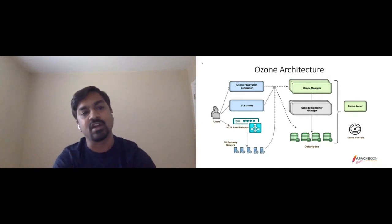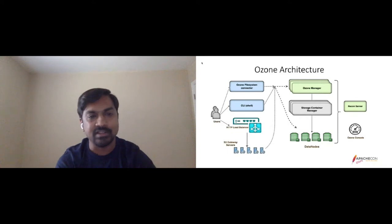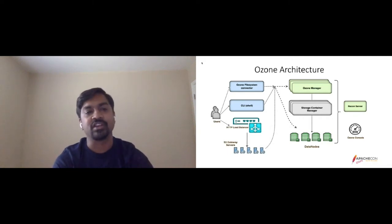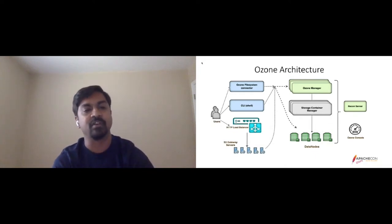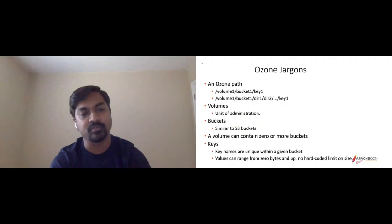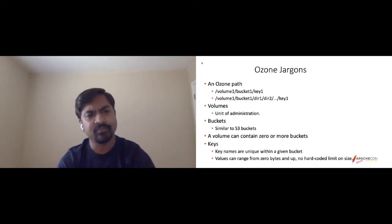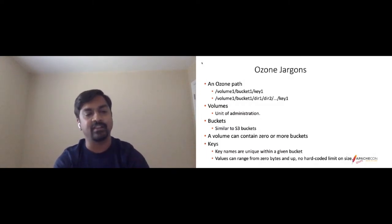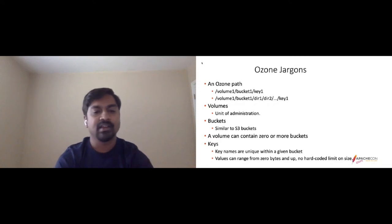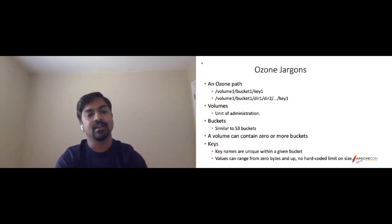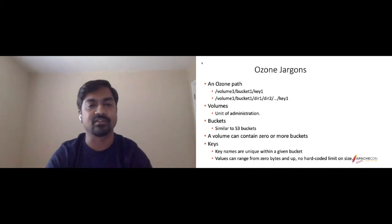Ozone uses a path structure of volume, followed by bucket name, followed by key name. An admin creates a volume, which can relate to a business group, and users create buckets within that volume — a bucket is equivalent to a directory. Volumes can have zero or more buckets, and buckets contain keys — the files you upload. Key names are unique within a given bucket, and values can range from empty files to anything above, with no hard-coded size limit.